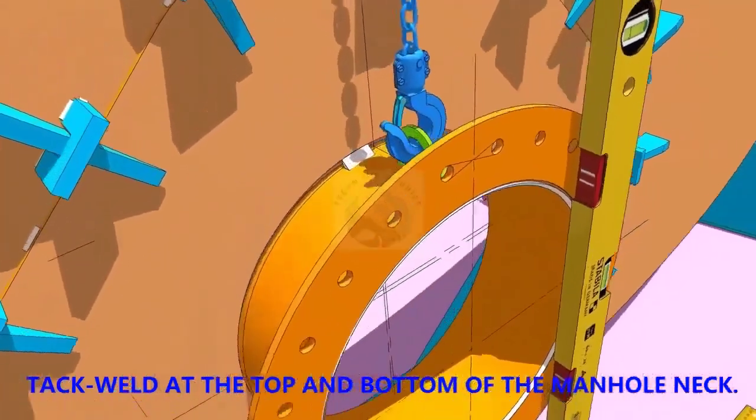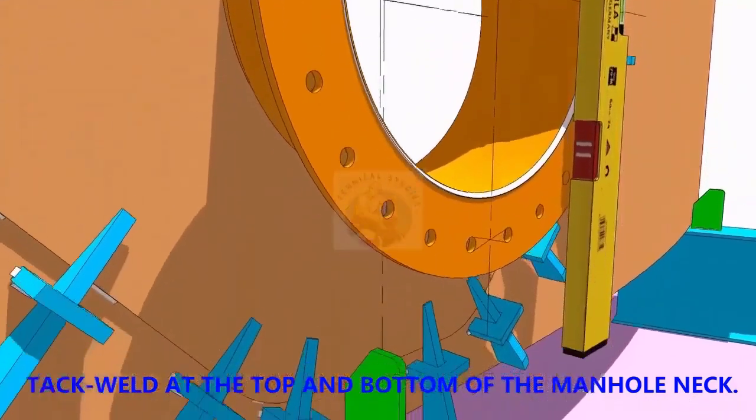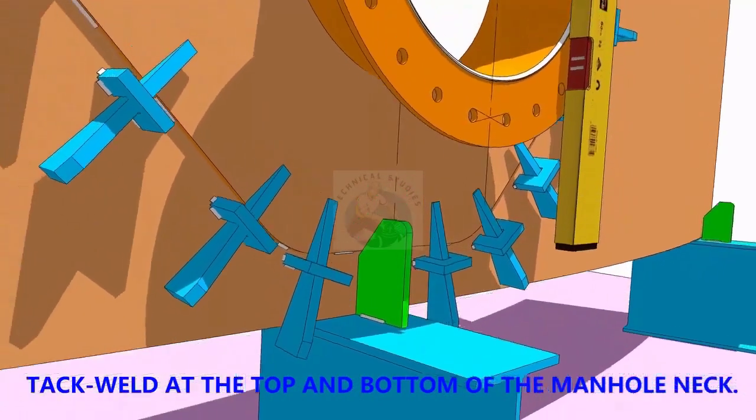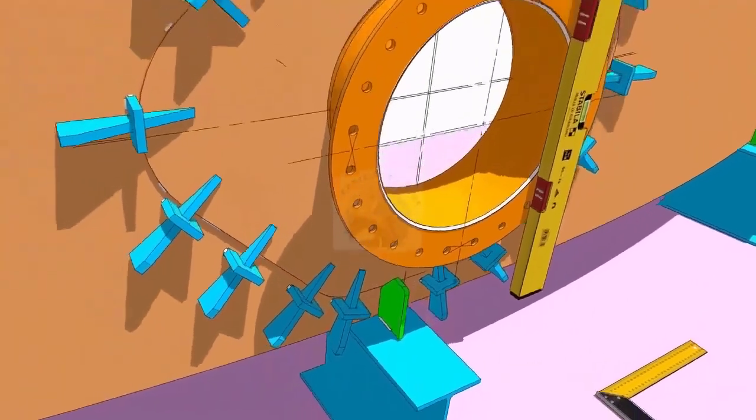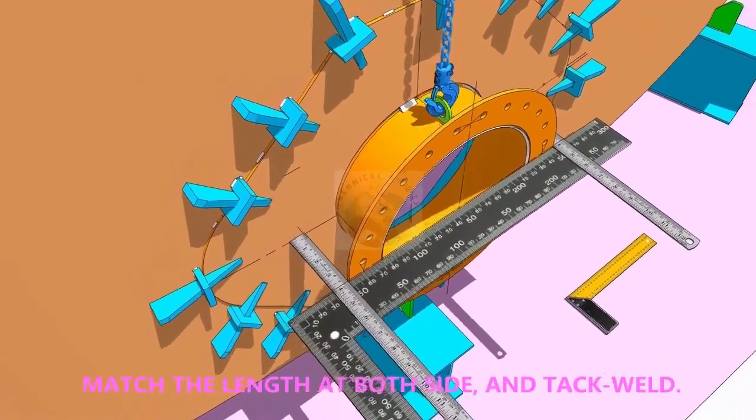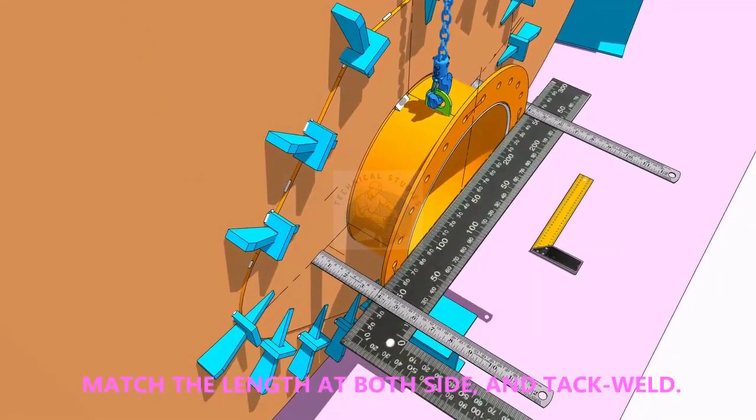TAC weld on the top and bottom side of the joint. Equal the distance on both sides of the flange as shown and TAC weld on both sides.